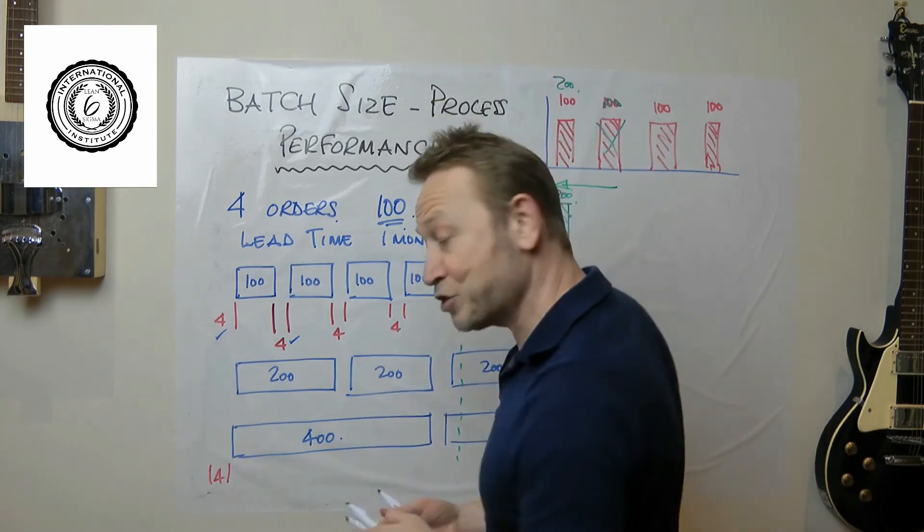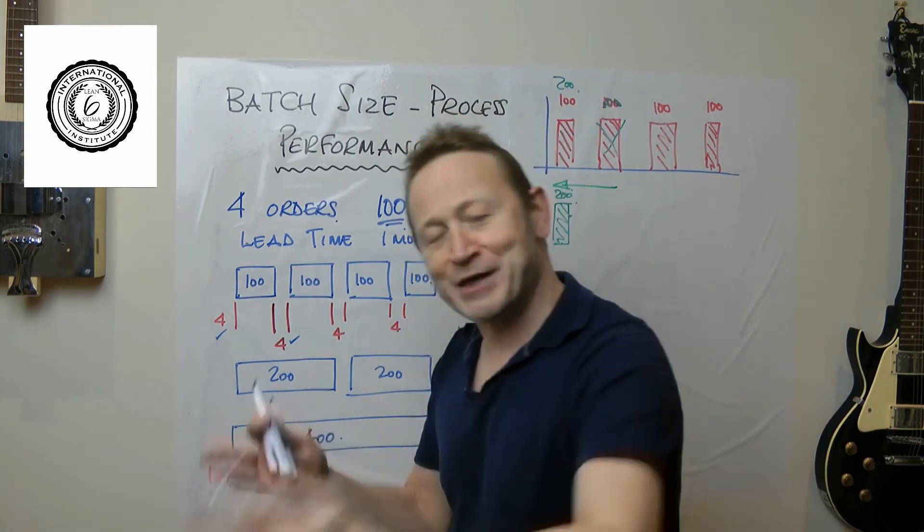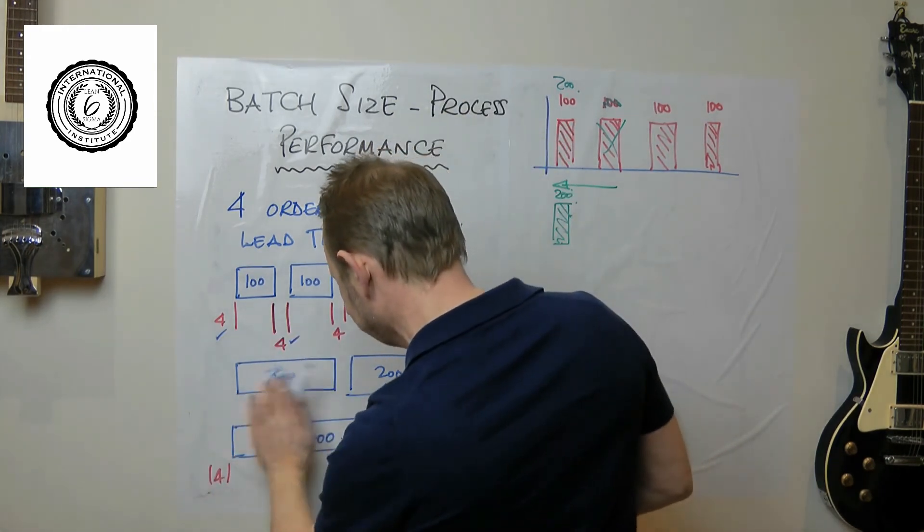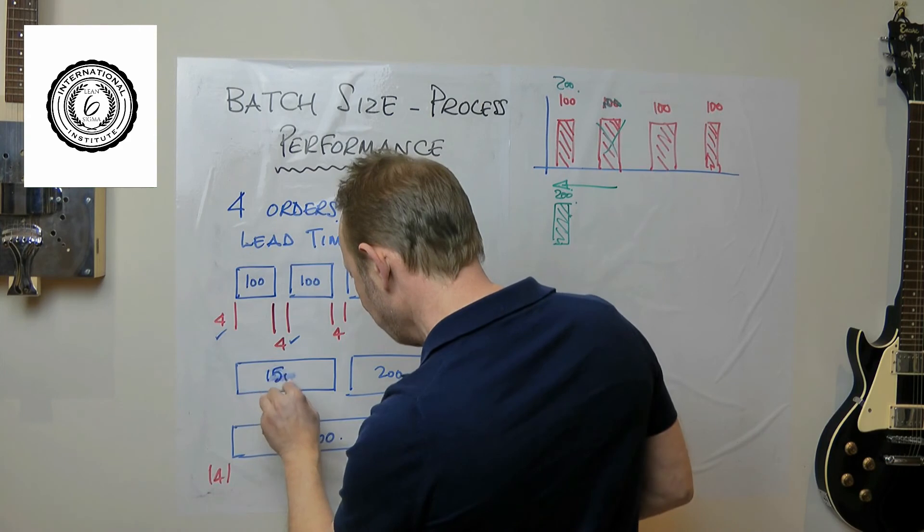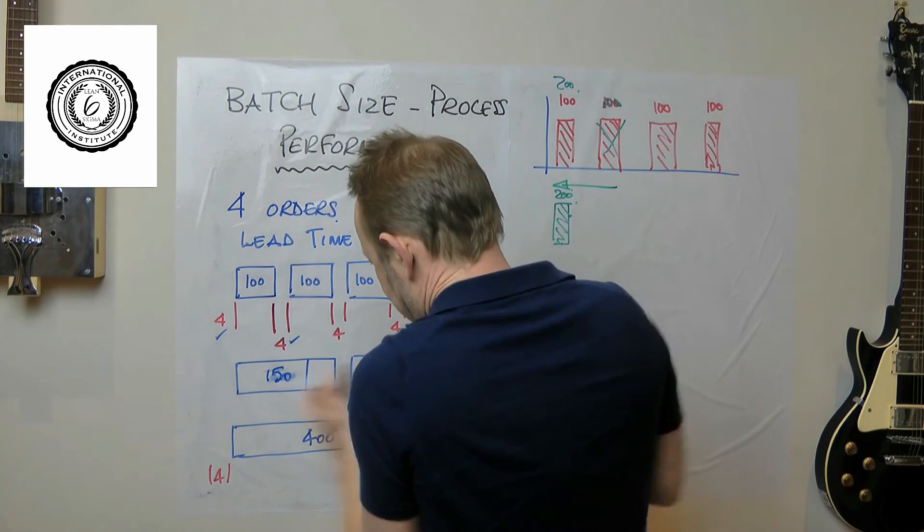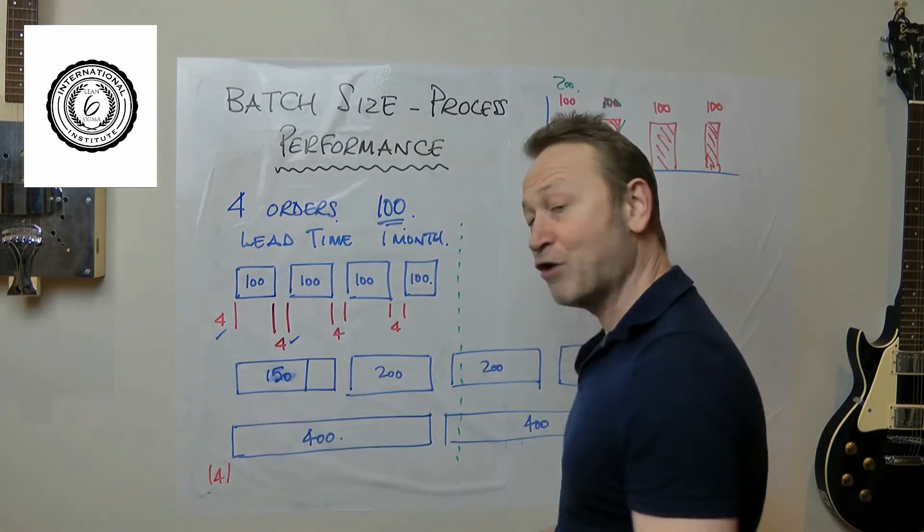So now what do you do? Well of course the planner replans. He goes into a whole rework process. He goes, oh can't do a batch of 200 there, I'll do a batch of 150. And then he brings everything forward and he rewrites the plan.